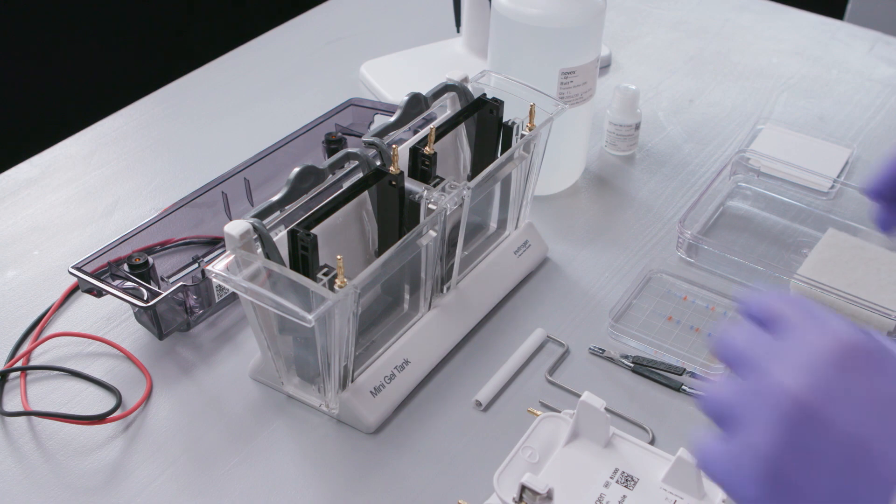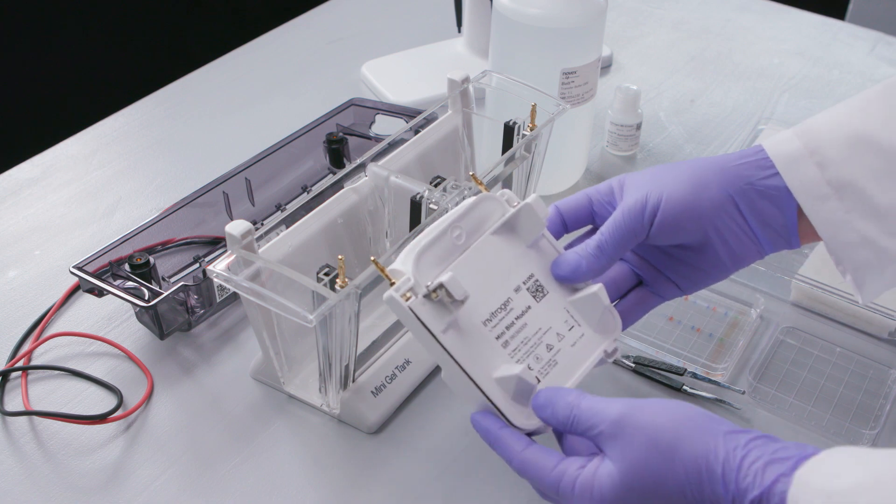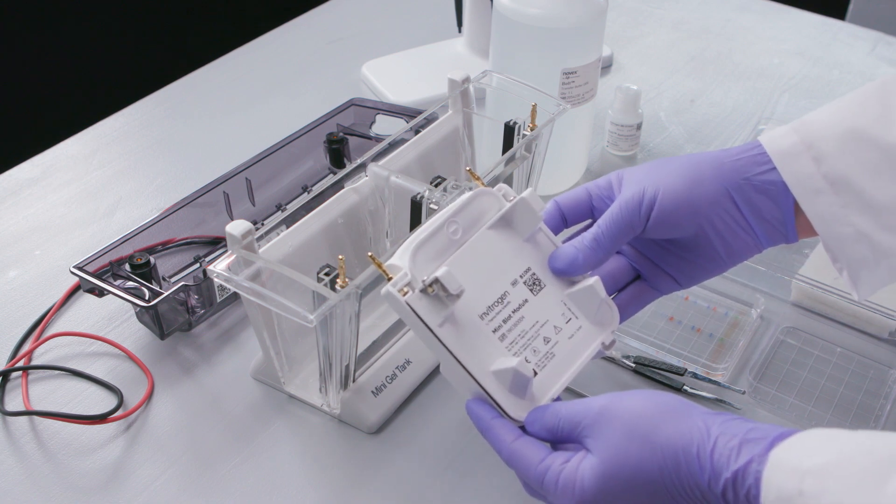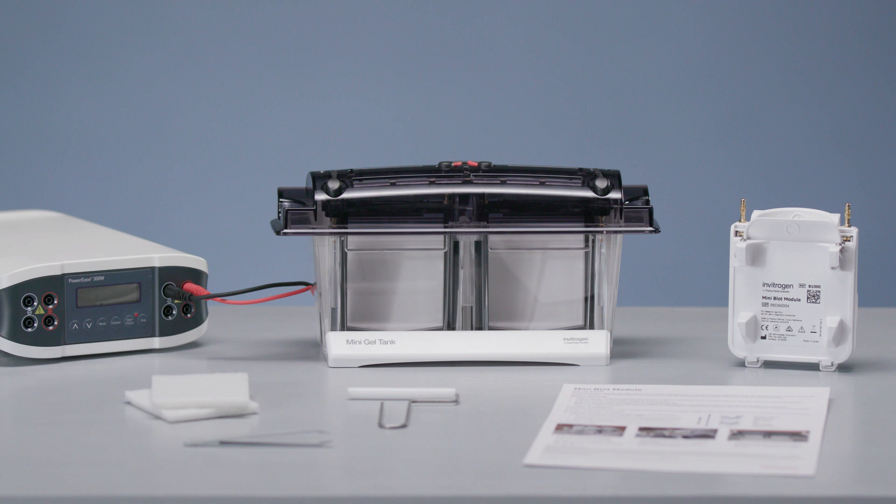Make sure the cassette clamps are removed before you set up your transfers. One gel is transferred per module, and two modules fit in one tank. Included with the mini blot module kit is a roller, sponge pads, tweezers, and a quick reference card.